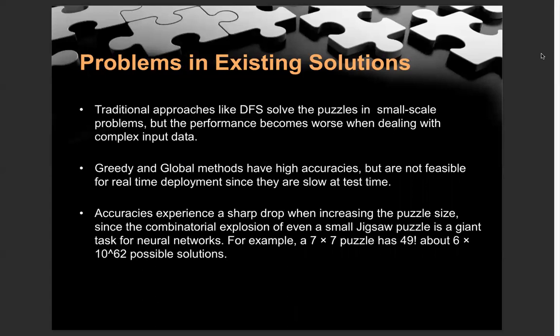Past researchers have confronted many challenges. Although greedy and general approaches have been approved to have very high accuracy, they are usually very slow in test time. For approaches using neural networks, we find out that accuracy is likely to experience a drop when we increase the puzzle size. When the number of pieces increase, the probability of choosing the correct permutation order is also decreased.